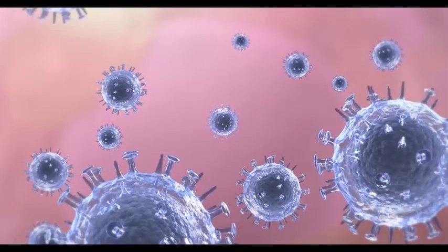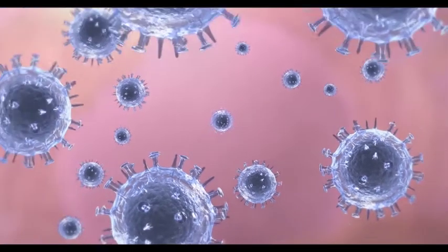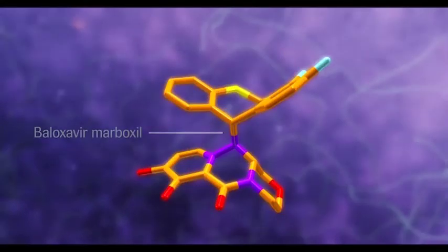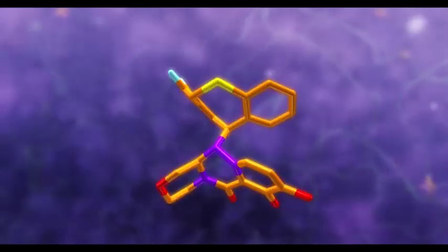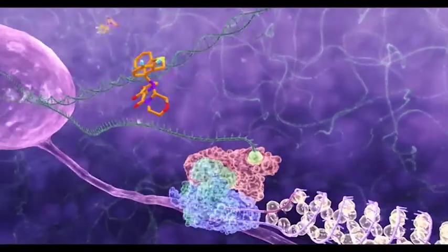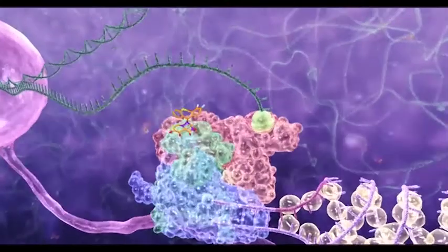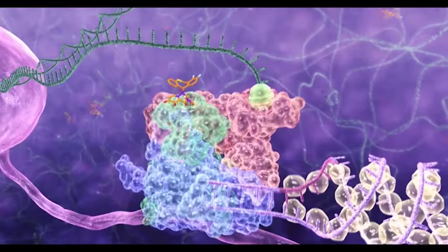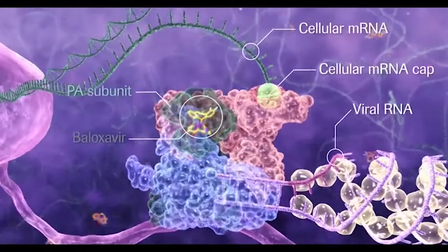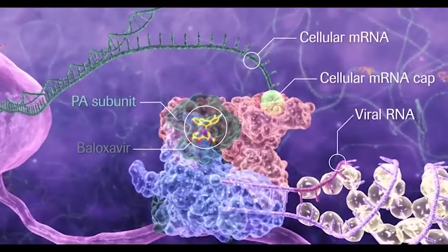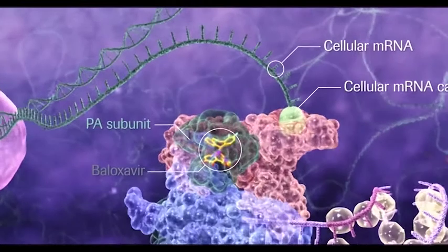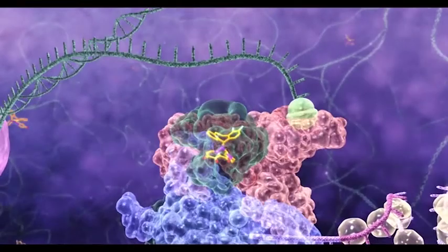So, is there a way to break this cycle? A first-in-class antiviral called baloxavir is a cap-dependent endonuclease inhibitor that blocks an early stage of the influenza viral life cycle. Baloxavir binds to the PA subunit of the RNA polymerase complex and prevents cap snatching.